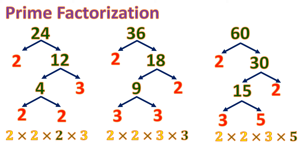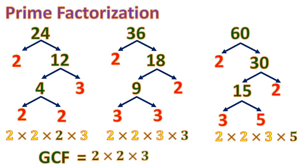We highlighted the common numbers in the prime factorizations of all three numbers. All of them have two 2's and one 3 in common. The remaining factors — an extra 2, an extra 3, and a 5 — are not common to all. Since there are two 2's and one 3 in each, we multiply those common primes: 2 times 2 times 3 equals 12. So the greatest common factor is 12.